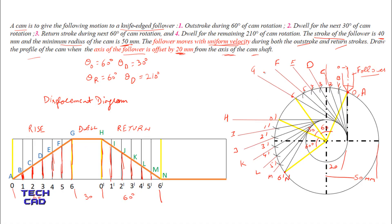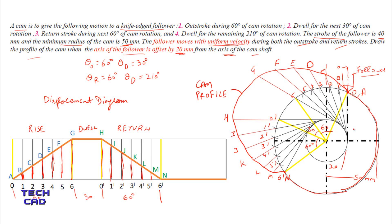Connect all the marked alphabet points freehand to complete the cam profile. This complete curve is the cam profile when the axis of the follower is offset by 20 mm from the axis of the camshaft. I hope you understand this question. Thank you everyone.